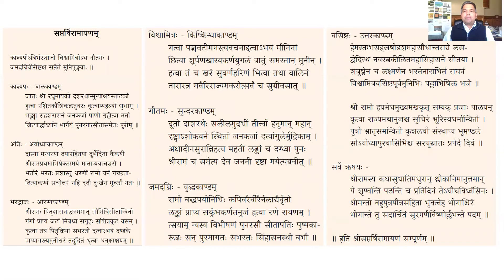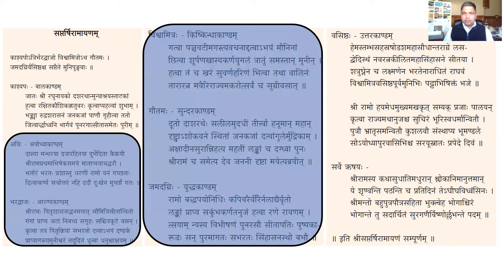Saptarshi Ramayana is a beautiful short summary of the entire Valmiki Ramayana in about seven to eight shlokas. We will discuss the journey of Ram, Lakshman and Sita as described through Ayodhya Kand, Aranyakand, Kishkindha Kand, Sundar Kand and Yuddha Kand, eventually returning to Ayodhya where Ram was coronated as king.